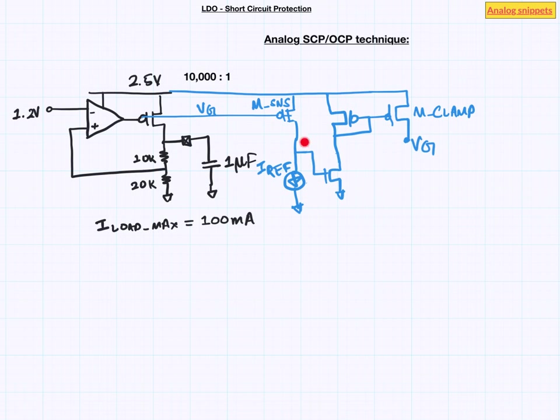But in overcurrent condition this voltage goes high. The inverter stage turns on and M clamp clamps the VG that means it stops VG to go all the way to the 0.